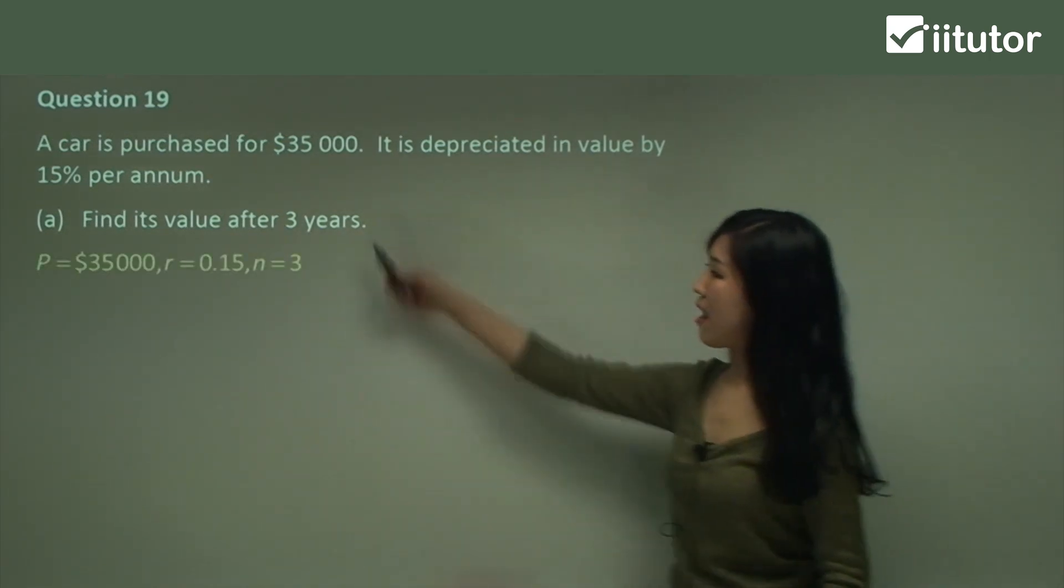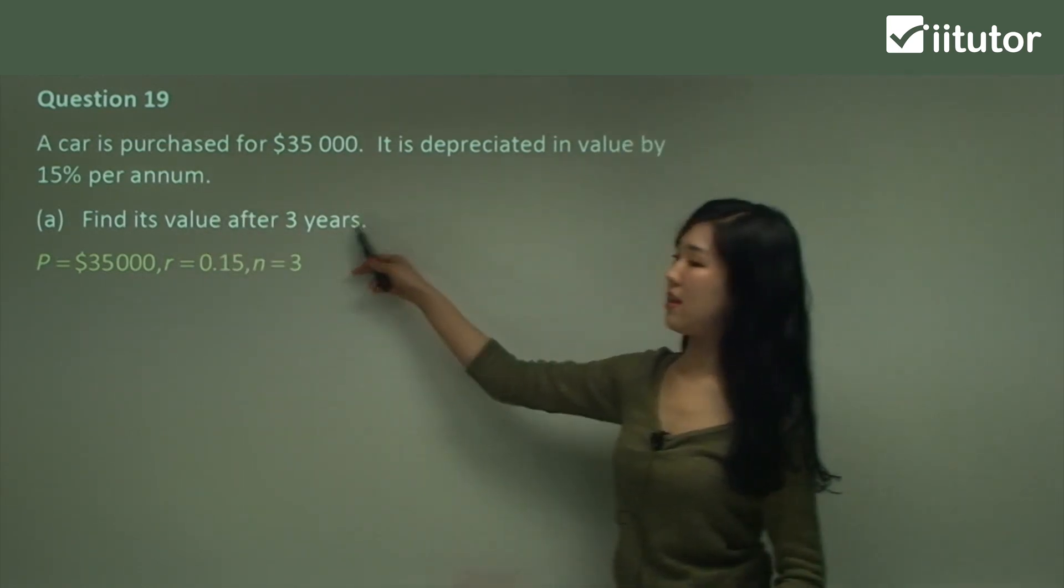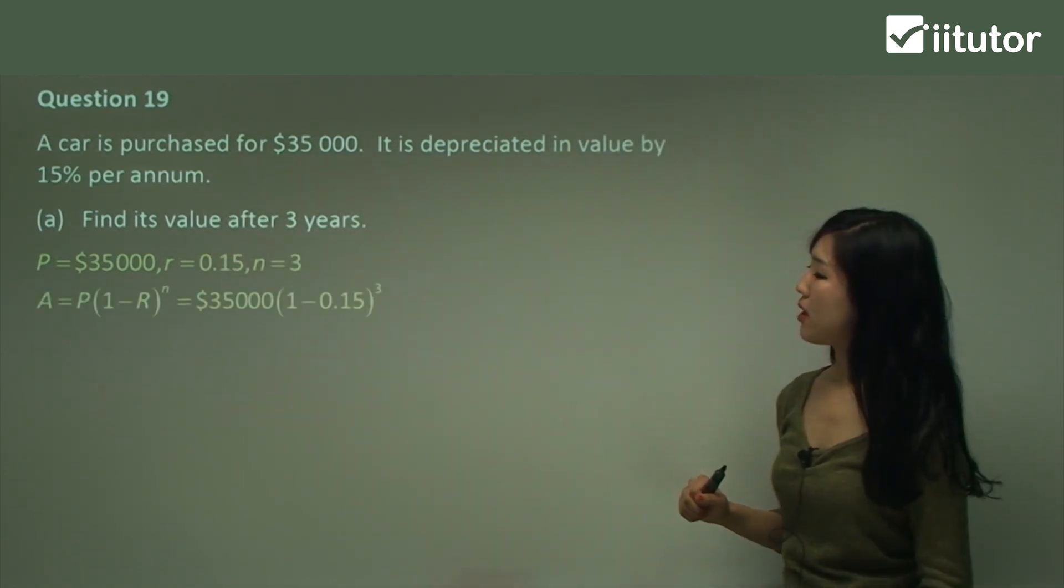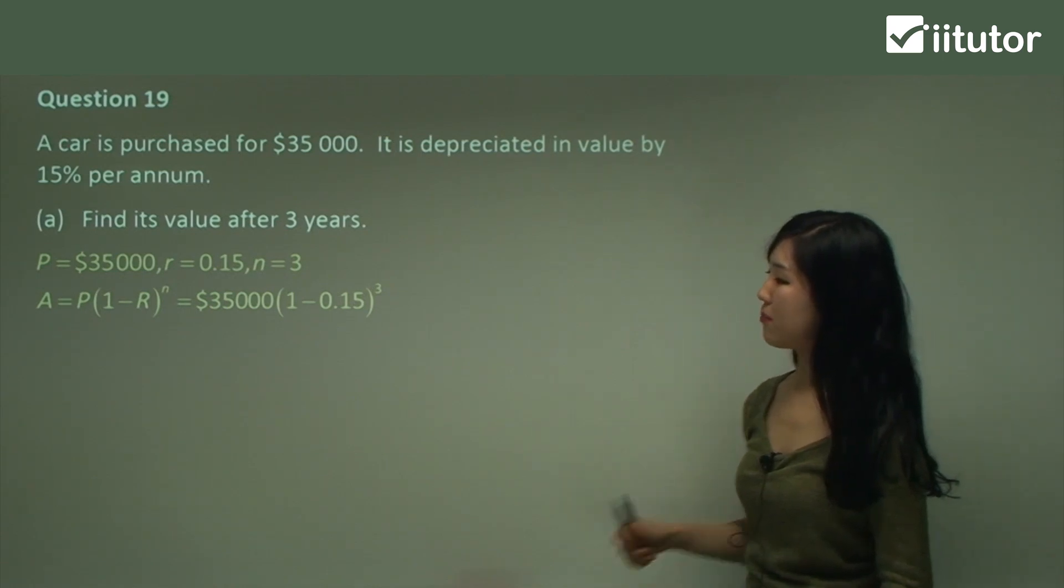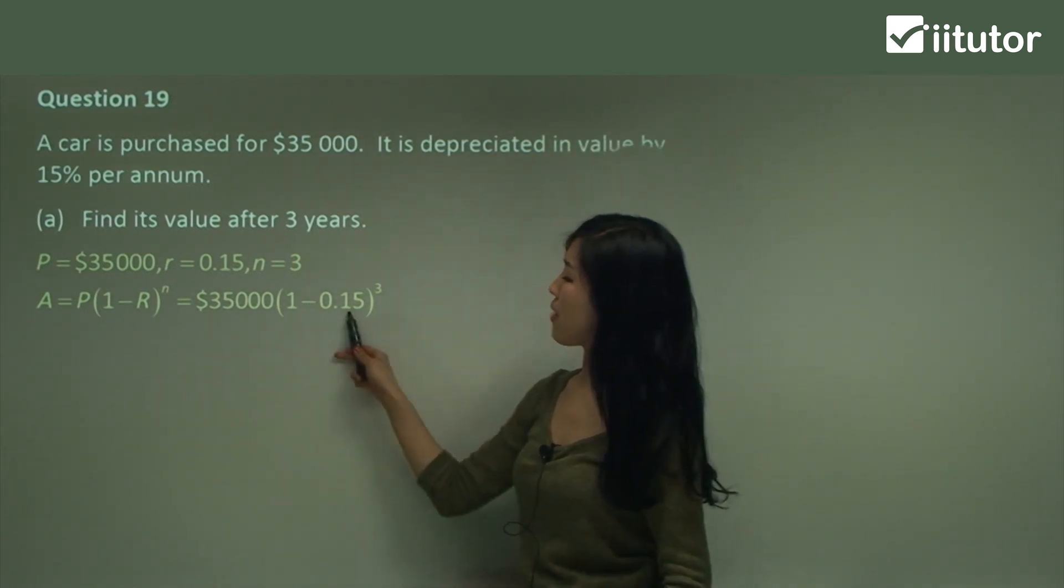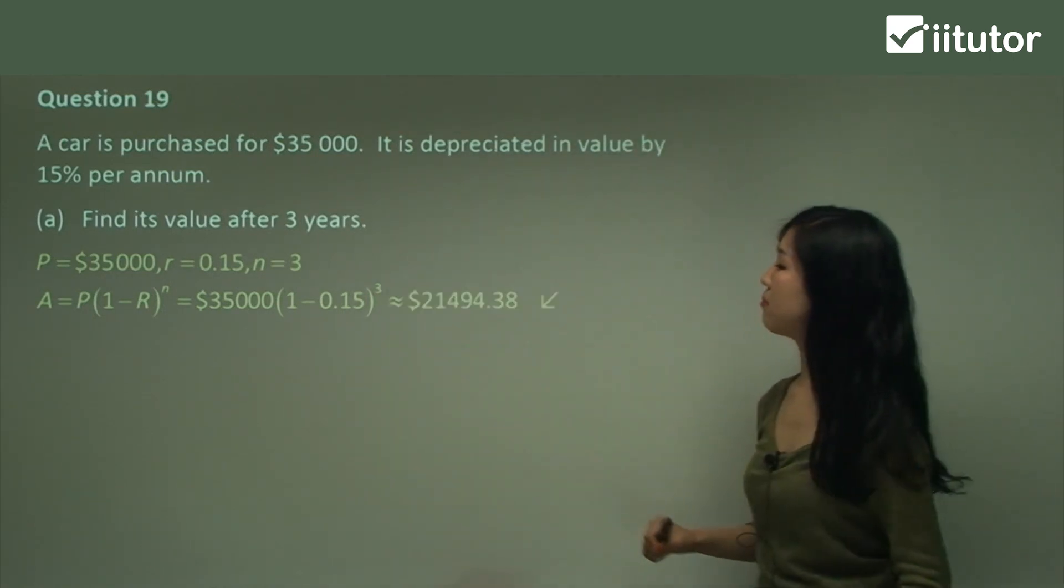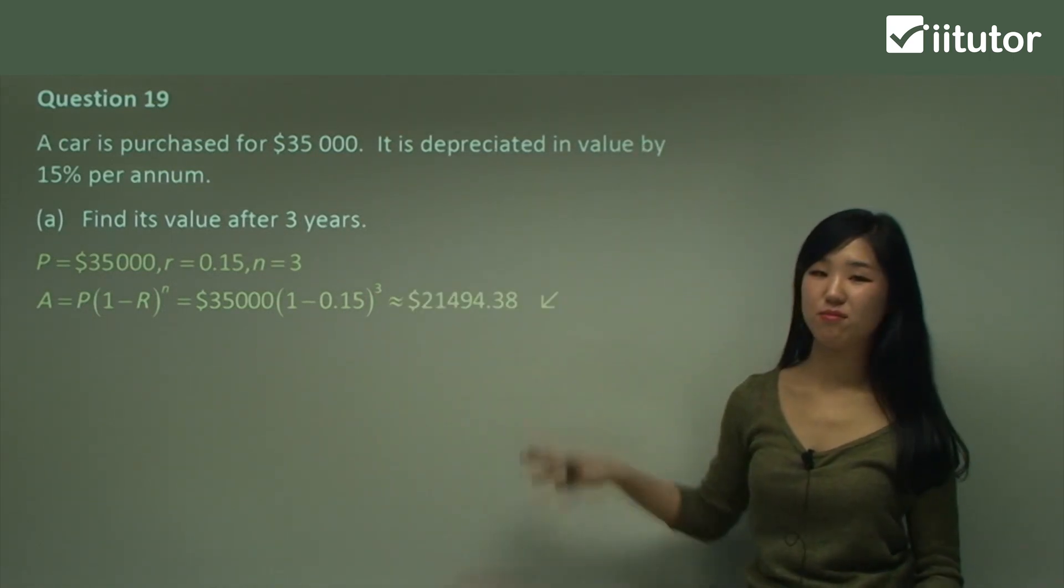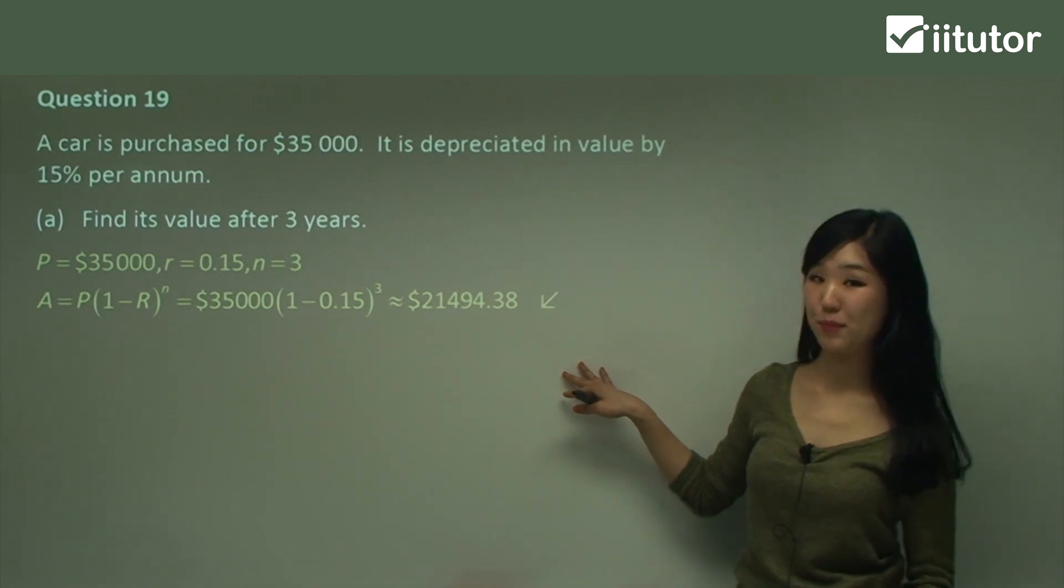So p is our initial value, rate is 15%, n is three years. Put it into your depreciation formula. Where this is the principle, rate, the number of terms, and just calculate it. That's just it. Exactly the same as the example.